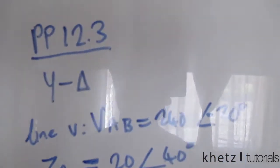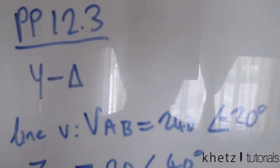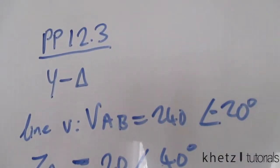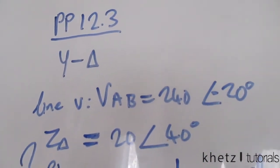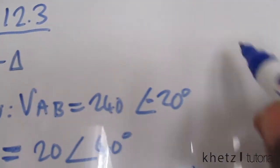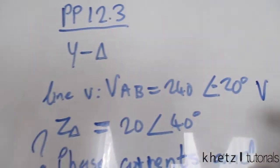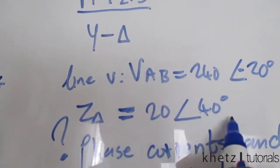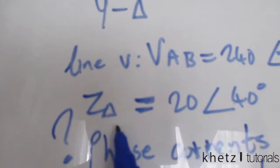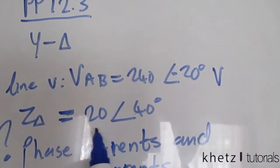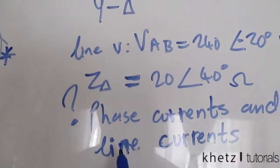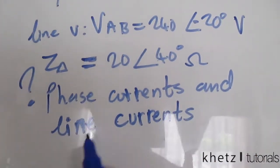Welcome to GAT Tutorials. In this video I'll be doing practice problem 12.3. We're given a Y-delta connection with a line voltage VAB of 240 at an angle of negative 20 degrees, and a delta impedance per phase of 20 at an angle of 40 degrees. We're asked to find the phase current and the line current.